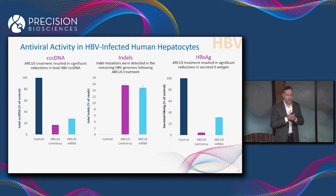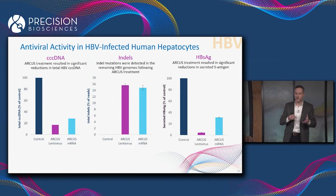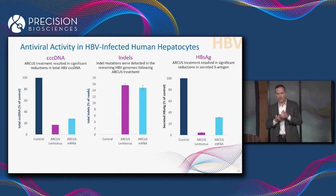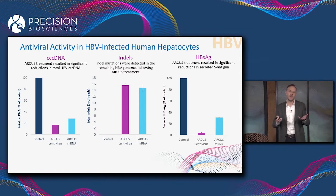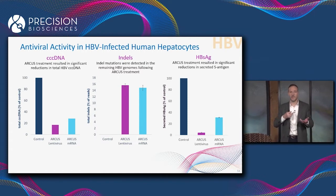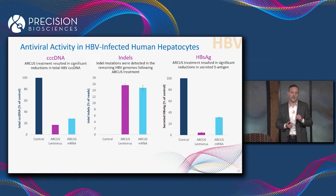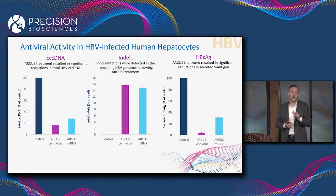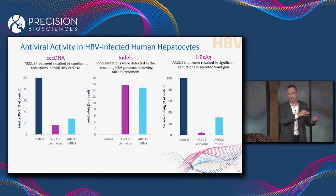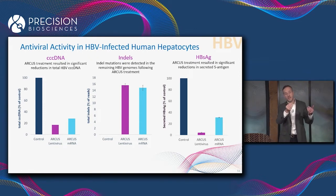We generated some data in primary human hepatocytes in collaboration with Gilead a few years ago. Basically showing that we can introduce Arcus on either a lentivirus or mRNA into infected primary hepatocytes. We see significant reductions in CCC DNA, we see the introduction of a significant frequency of indel mutations that inactivate the virus in the remaining copies, and that combination results in significant reductions in secretion of HBV S antigen.